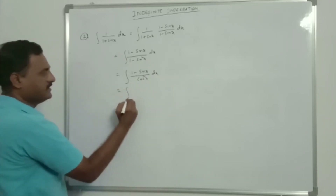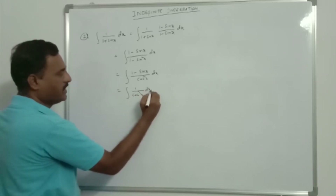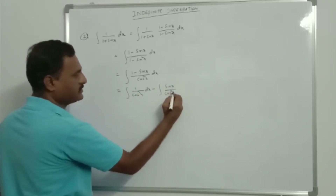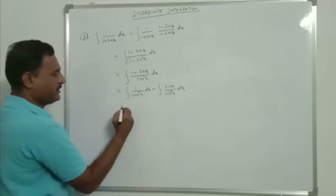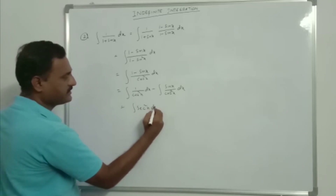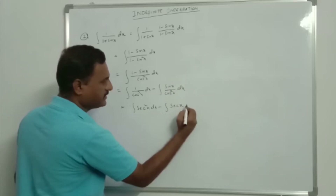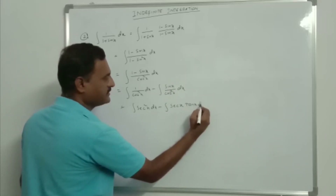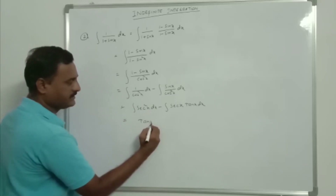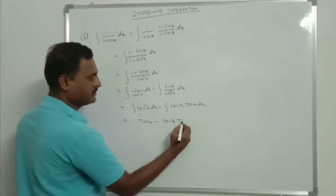That is equal to integration of (1 - sin x)/cos²x dx. This splits into integration of 1/cos²x dx minus integration of sin x/cos²x dx. That is integration of sec²x dx minus integration of sec x·tan x dx. So integration of sec²x is tan x, minus integration of sec x·tan x is sec x, plus c.